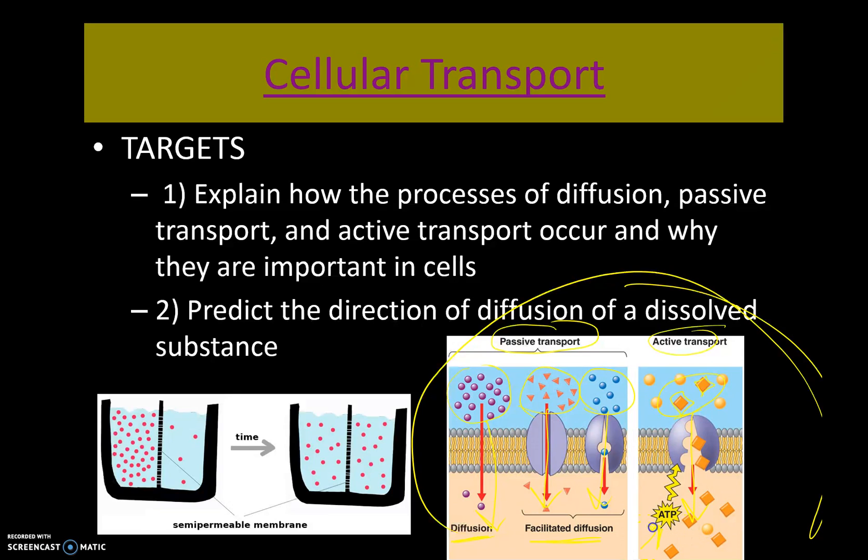Looking at this diagram, we can label these A, B, and C, and they would be like a time lapse. You would pour the solute — the red particles — on the left side of the container, and the blue particles would represent water. Then over time, those particles would diffuse across until they are evenly mixed, which is what is happening in C.